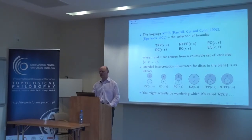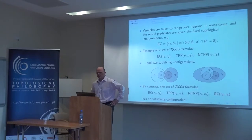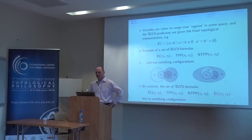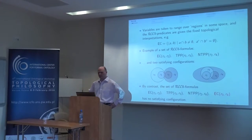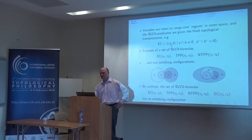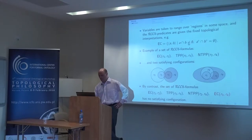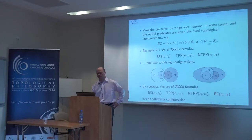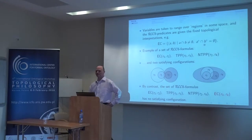I think probably everyone here has seen this language in one form or another. More formally, variables are taken to range over regions of some space — that is, subsets of some topological space — and the primitive predicates are always given completely fixed topological interpretations. For example, this is the interpretation of the external connectedness predicate. Two regions, A and B, are externally connected just in case they have points in common, but their topological interiors do not. I'll use a little circle to mean the topological interior of a region.